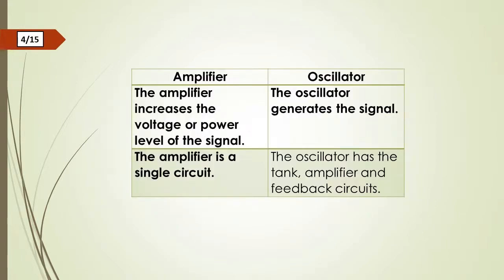Electronics Hints: Difference between the amplifier and oscillator. The amplifier increases the voltage or power level of the signal. The oscillator generates the signal. The amplifier is a single circuit. The oscillator has the tank, amplifier and feedback circuits.